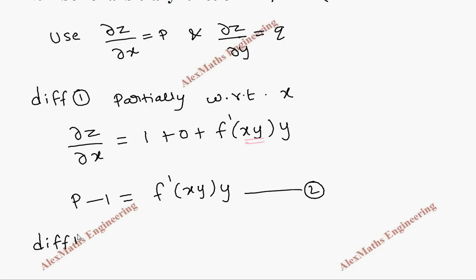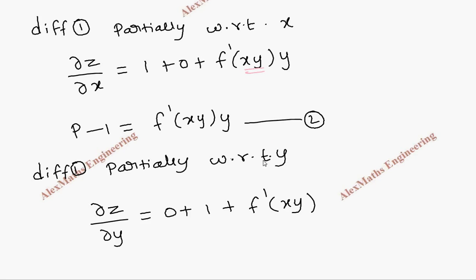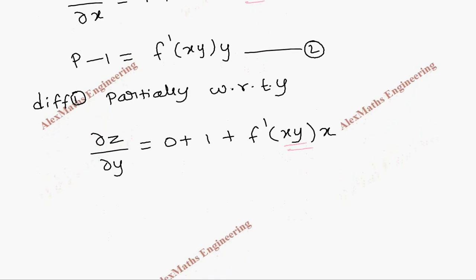Similarly, let's differentiate partially with respect to y. So dou z by dou y — on the other side, x derivative is 0, y derivative is 1, and f derivative is f dash of xy. Since we are doing partial derivative with respect to y, x is treated as a constant. After the chain rule, the derivative of xy is: constant written as it is and y derivative is 1. Rearranging, Q minus 1 equals f dash of xy times x. This is our third expression.